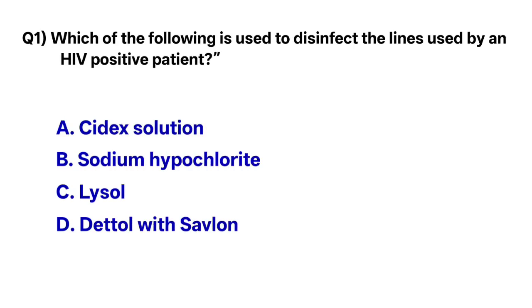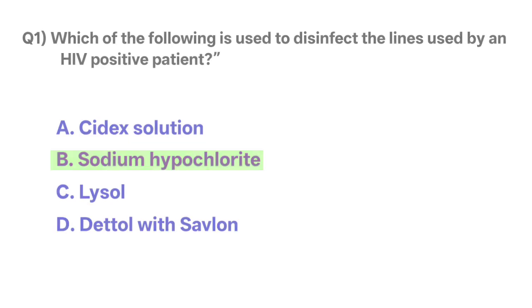Question number one: Which of the following is used to disinfect the lines used by an HIV positive patient? The correct option is B, sodium hypochlorite.